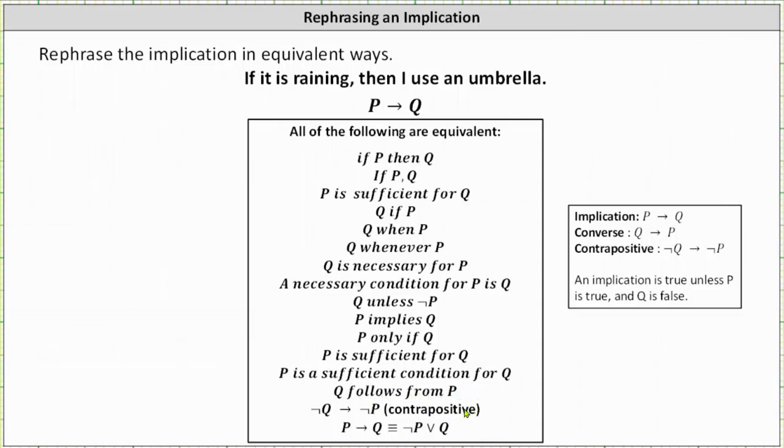Next way of the contrapositive, which is if not Q, then not P. And then finally, if P then Q is equivalent to not P or Q.